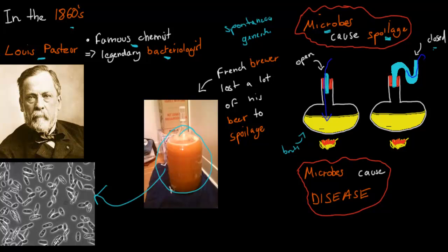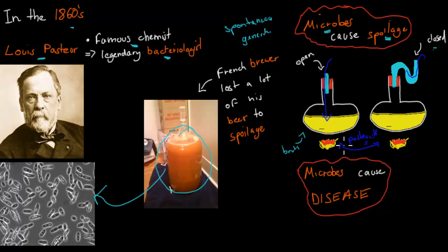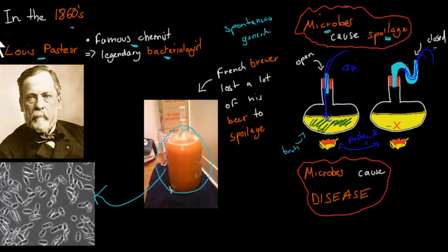According to people who believed in spontaneous generation, both flasks should be spoiled by the end. But what Pasteur did was first set up the experiment, then pasteurized both of them — using high temperatures to kill off any pathogens inside. He waited a while and saw that in one flask there was microbial growth, and in the other nothing happened. That showed the world that it must be a microbe from the air that entered the open flask and caused the spoilage — and that was really revolutionary.